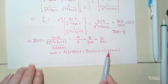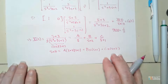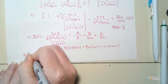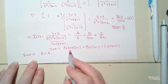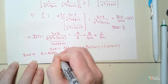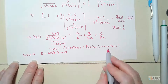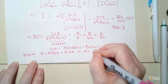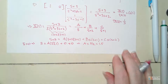The easiest approach is to plug in three convenient values of S. Let S equal zero first: the left side gives 3, and the B and C terms go to zero, leaving 3 equals A times 2 times 1. So A equals 3/2, which is 1.5.